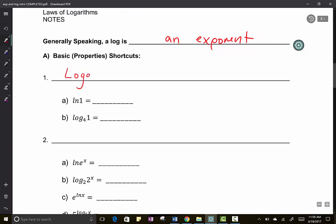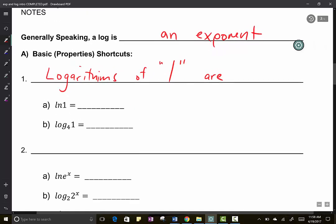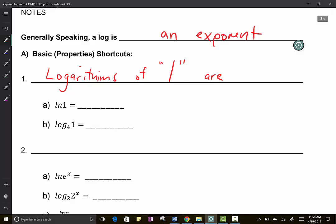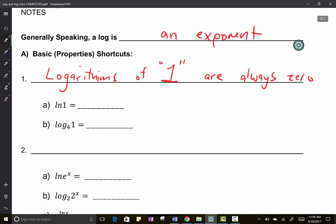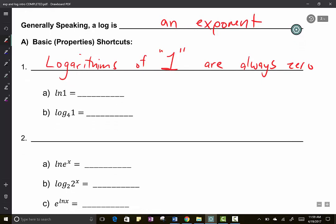First one is the easiest one. Logarithms of the number one. The logarithm of one is always zero.